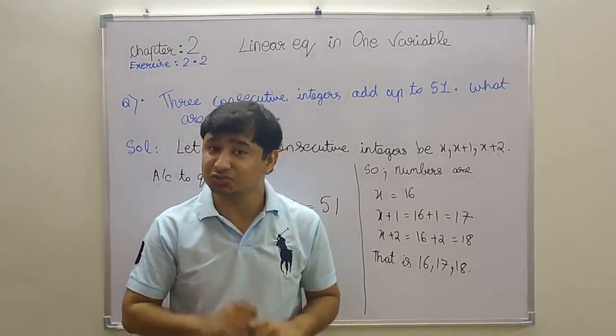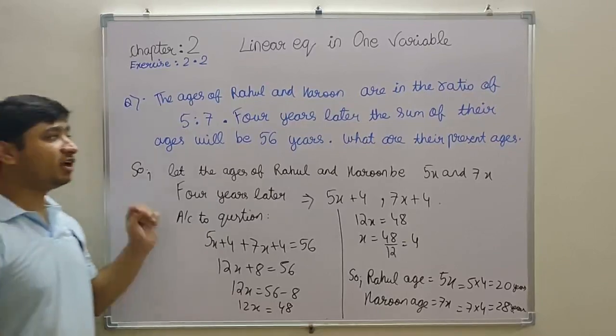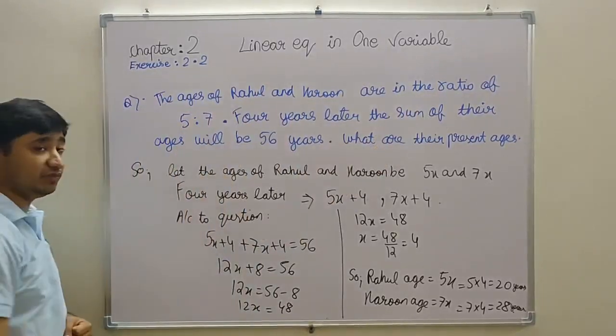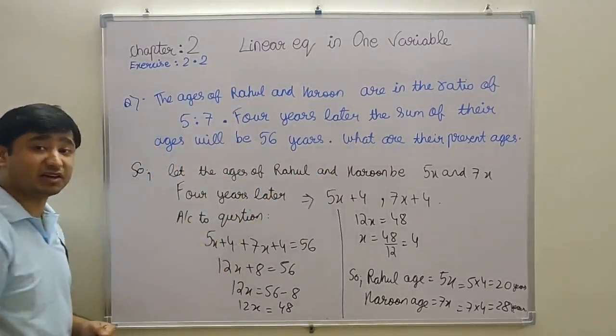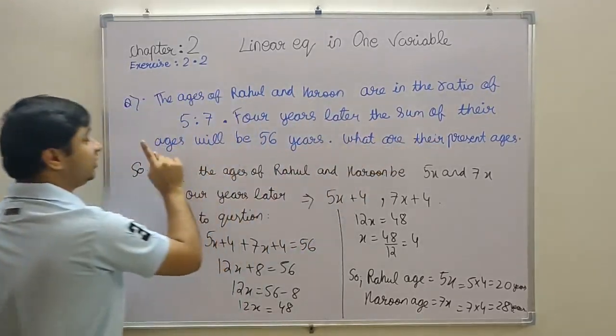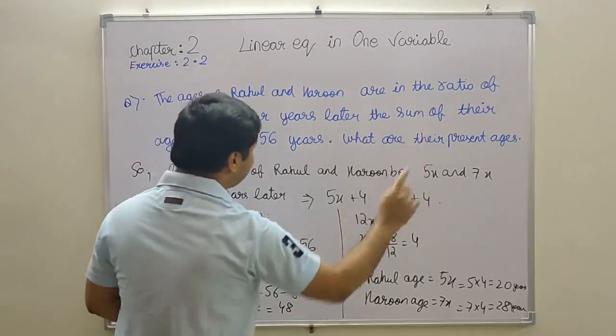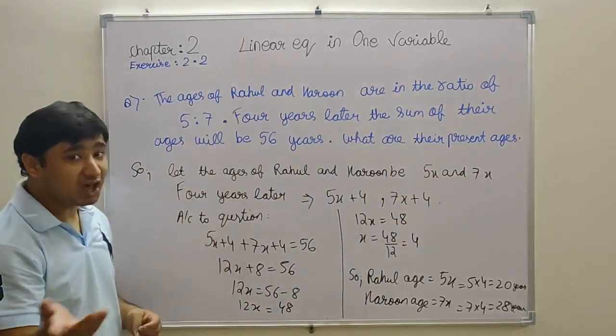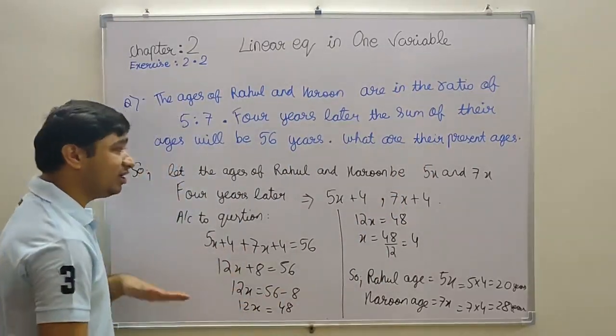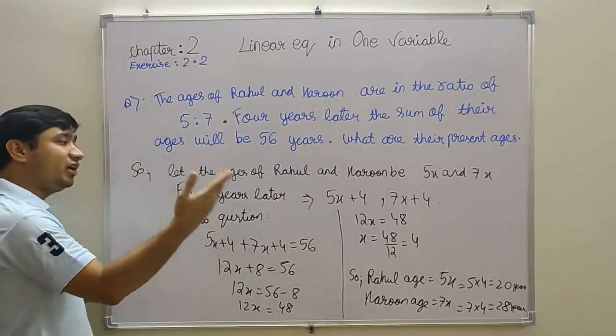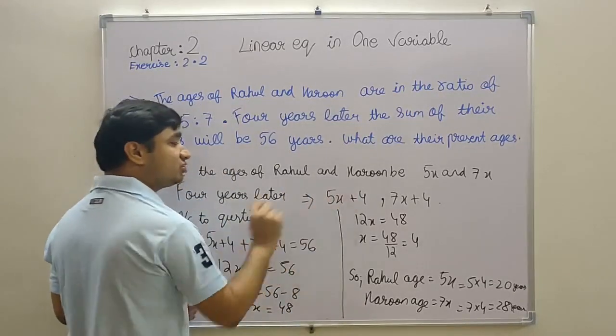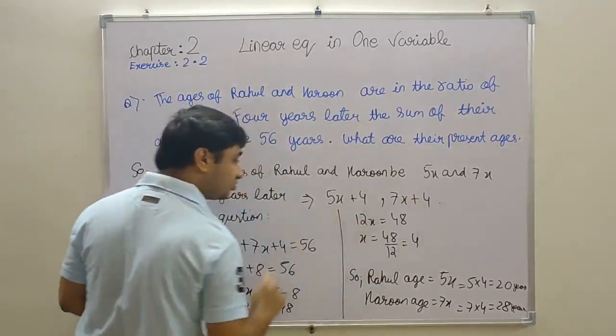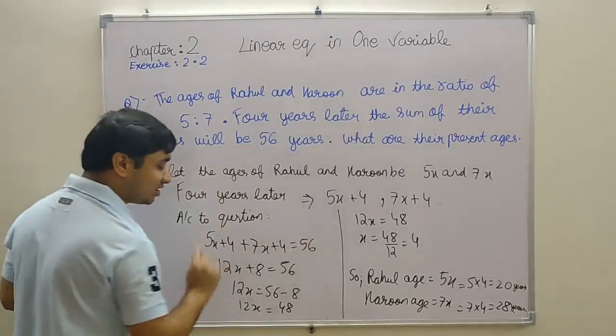Moving toward the next and last question of today's video. Here we come. The last question: the ages of Rahul and Haroon are in the ratio of 5:7. You know that when ratio comes, we consider it as x. Four years later, the sum of their ages will be 56 years. What are their present ages? So let the ages of Rahul and Haroon be 5x and 7x. Four years later, 4 years later, both will be older. It's not like Rahul will get younger and one will get older. So four years later, both their ages will be 5x + 4 and Haroon's will be 7x + 4. Rahul's 5x + 4, Haroon's 7x + 4. According to question, the sum of both ages is 56.